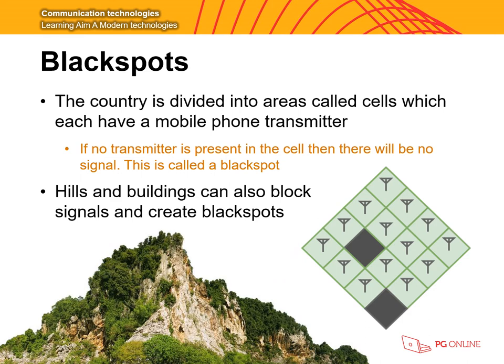This brings us to something called black spots. The country is divided into areas called cells, each with a mobile phone transmitter. If there's no transmitter present, there will be no signal — this is called a black spot. You may have black spots in your house or school. When you go on train journeys through the countryside, you may notice you lose your mobile connection for a period of time. Hills and buildings can also block signals and create black spots. For people living in a black spot location, this means no signal at any point, making daily online activities very difficult.